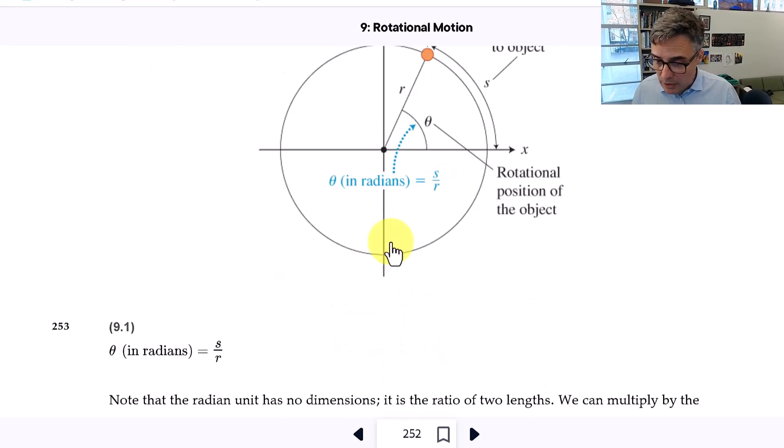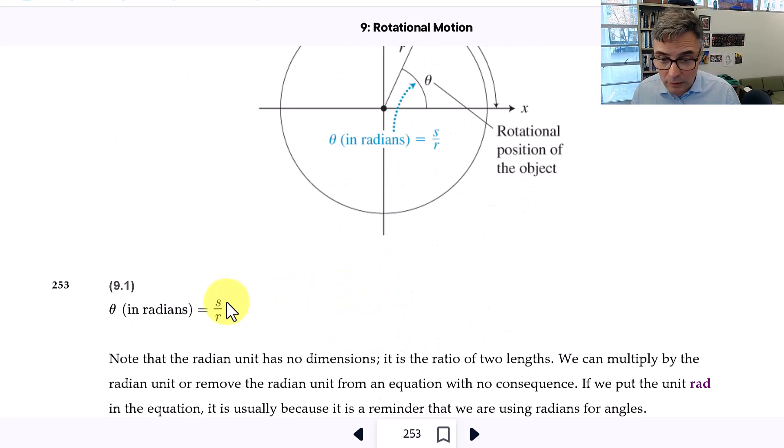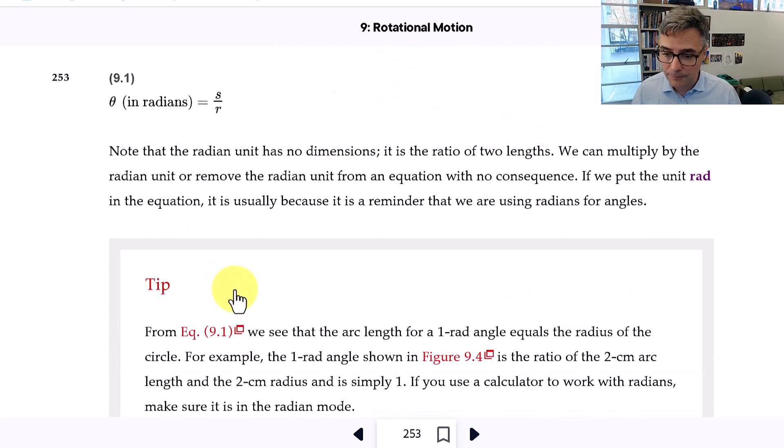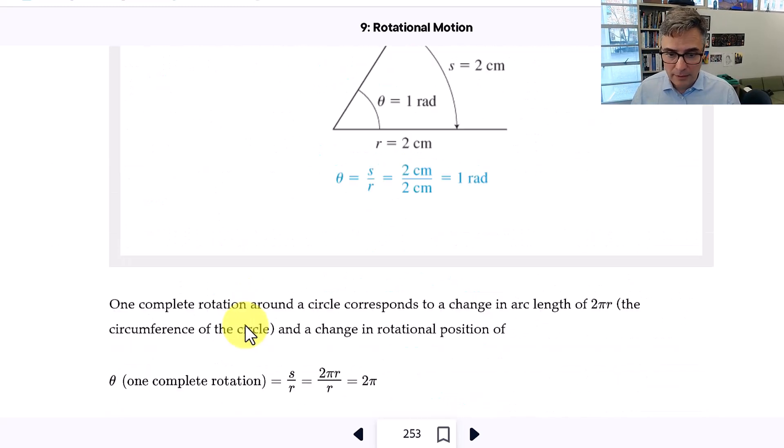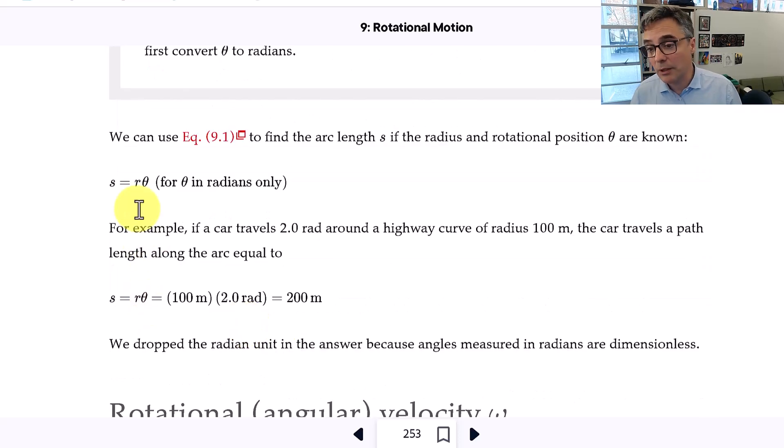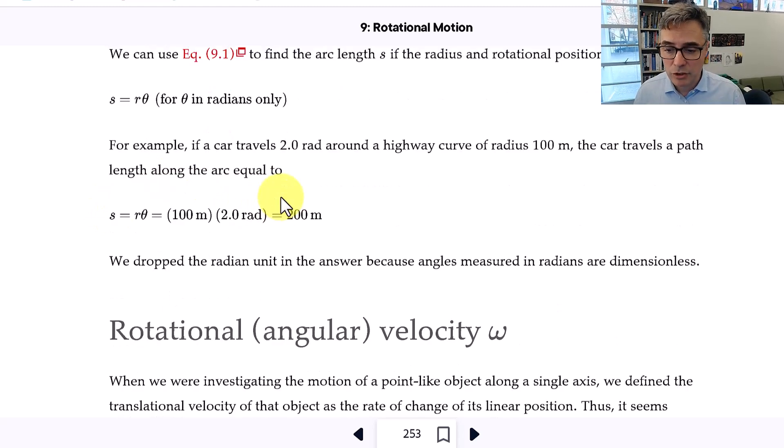If you do that, then you get this arc length s and this equation 9.1, which is the angle, angular position, is the arc length divided by r. And then you can rearrange that to give you the arc length is r times theta, if theta is measured in radians.